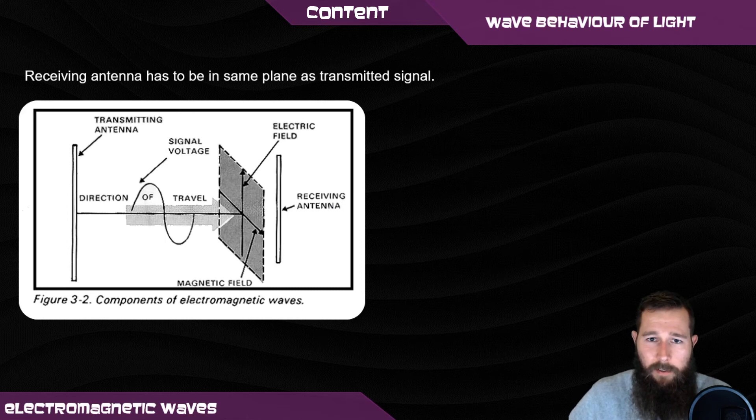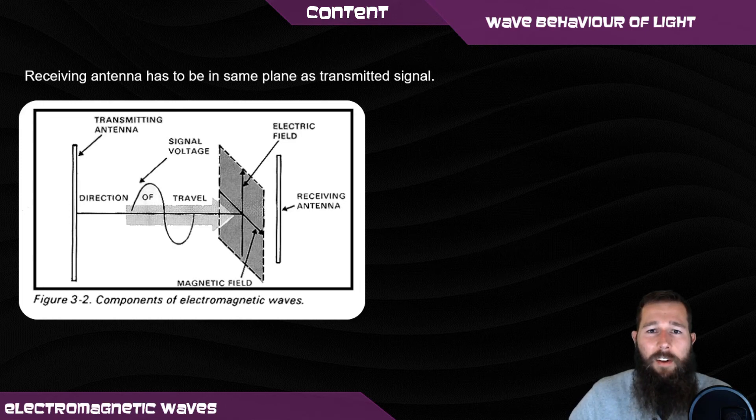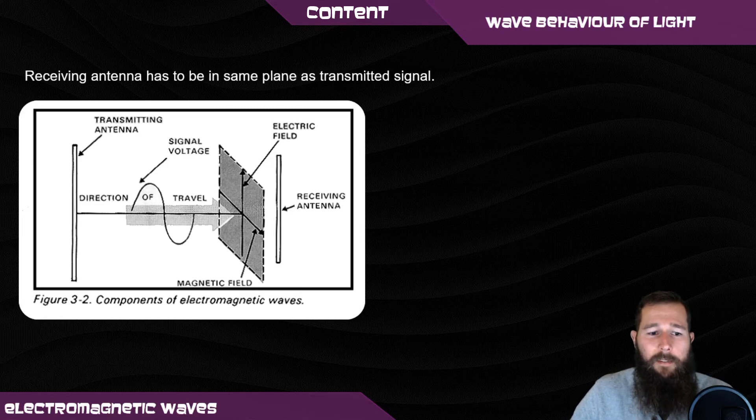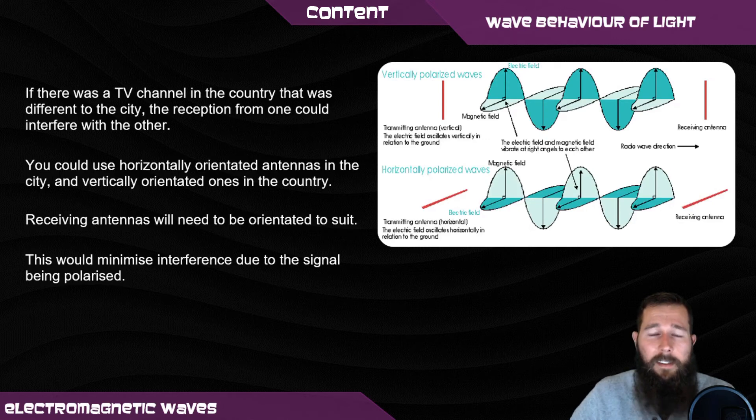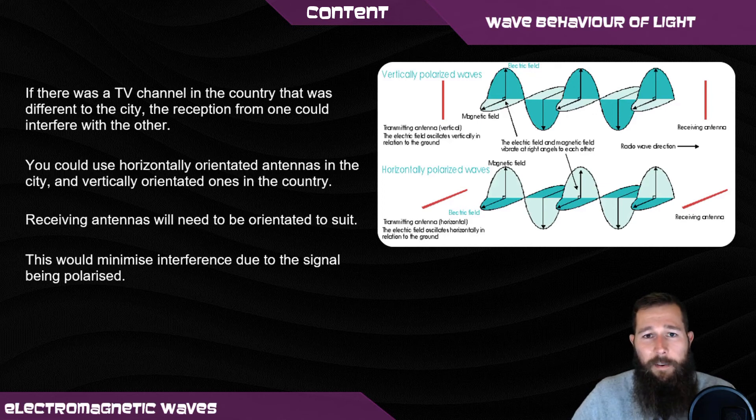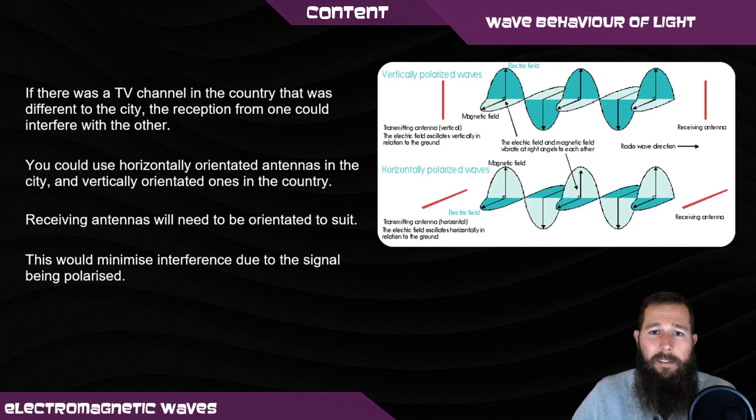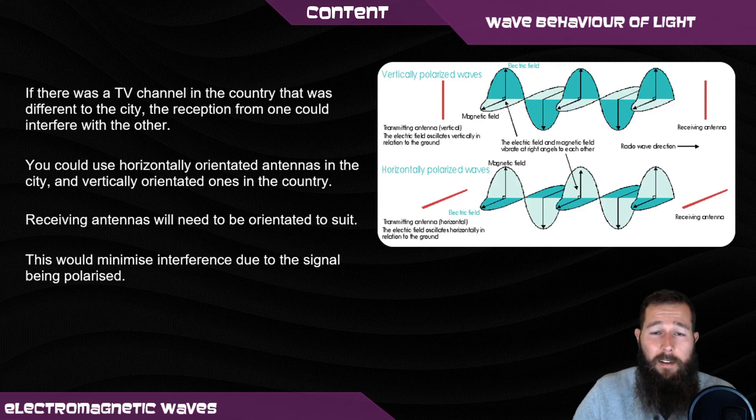When we want to receive a radio signal, our antenna that we've got for our device has to be in that same orientation. So if the signal was transmitted with the plane of polarization being vertical, then our antenna to receive it also has to be vertical. Now with this information, there could be a situation where you've got a town that's close to the country and close to the city, and it receives two signals of radio stations or TV stations. There could be a lot of interference because they transmit on the same frequency. If the country signal was transmitted in a vertical plane and the city on a horizontal, because of the polarization, you can minimize a lot of the interference.